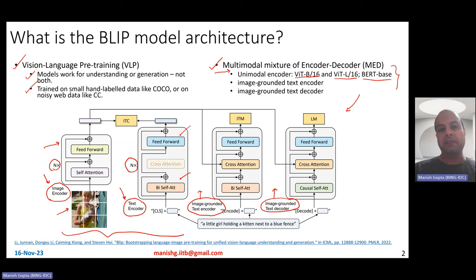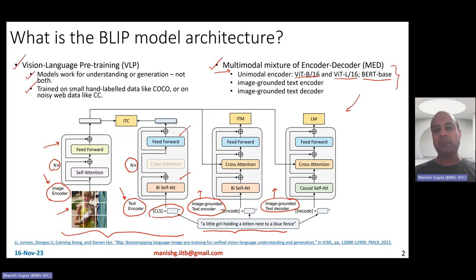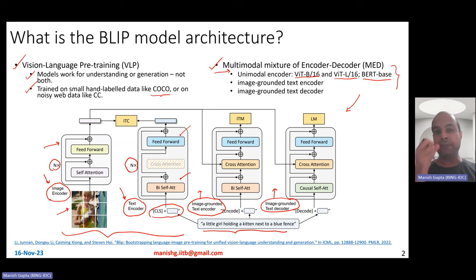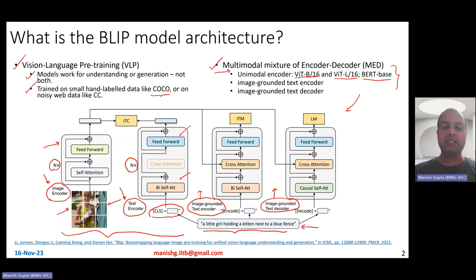The BERT model takes a CLS token at the beginning and then can take a text as input. This multimodal mixture of encoder-decoder model is pre-trained on image-captioning data from several datasets — COCO, Conceptual Captions, LION, SPU, and other image-captioning datasets. The idea is that there is an image as input, and then there could be a caption as input or you want to generate the caption, depending on how you look at the task.